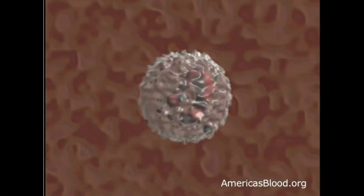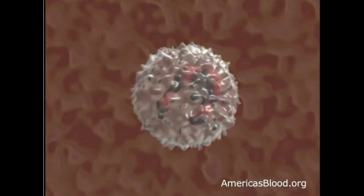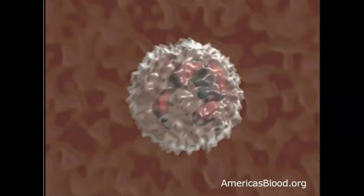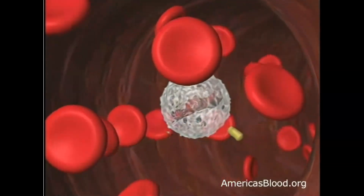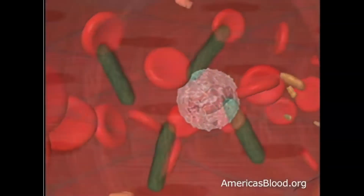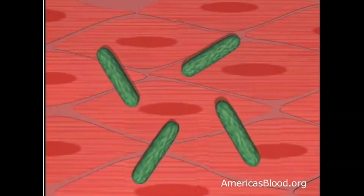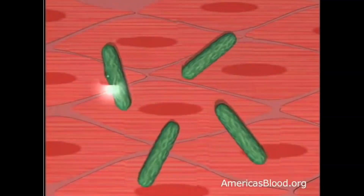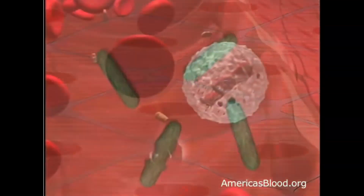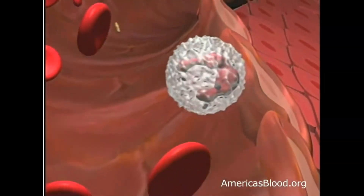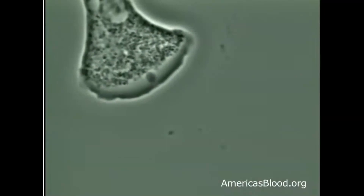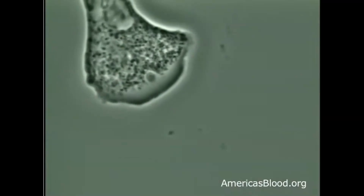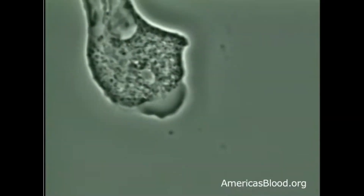White blood cells are the body's defense system. They fight infection from bacteria, viruses, and all those nasty microbes that can cause disease. Whenever germs begin to infect your body, they send out a signal that the granulocyte recognizes. As soon as the granulocyte detects the signal, it begins its journey to the site of the infection. When they find the invader germ, they quickly move in for the kill, first attacking the invader and then eating it.